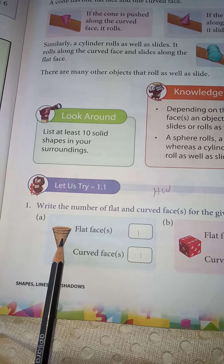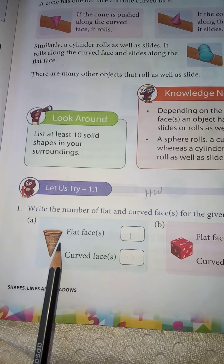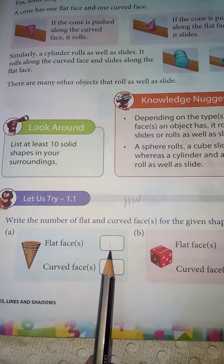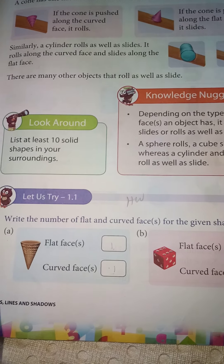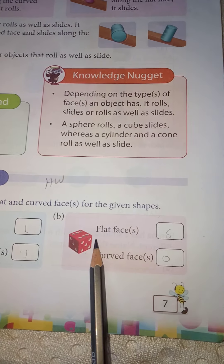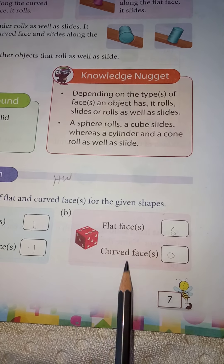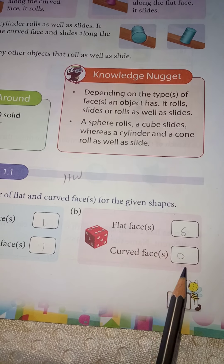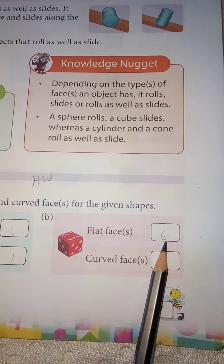A cone has one flat face and one curved face — write one in both boxes. A cube has 6 flat faces and doesn't have any curved face, so write 6 for flat faces and 0 for curved faces.